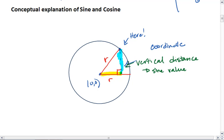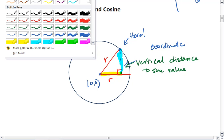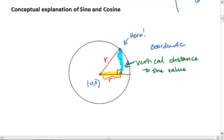And then the horizontal distance is your cosine value.